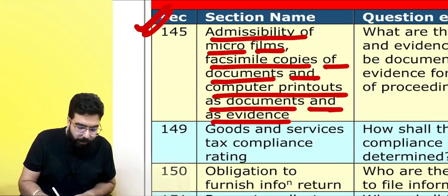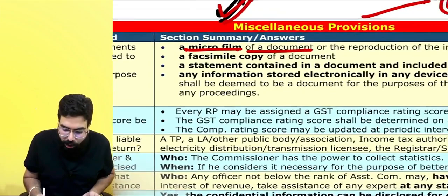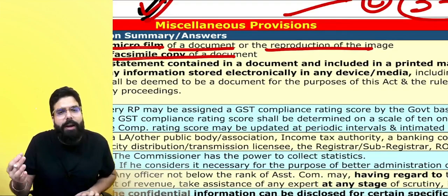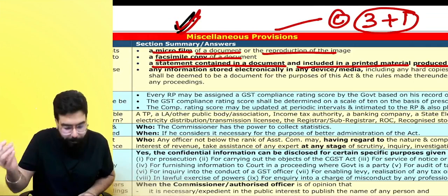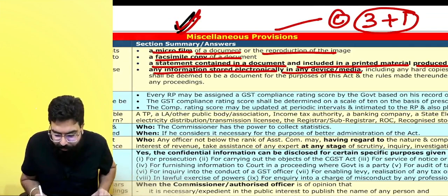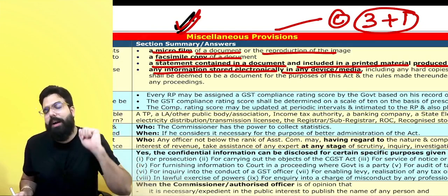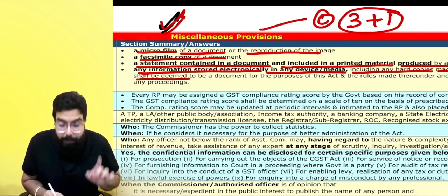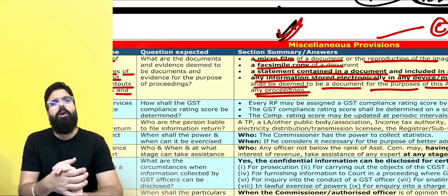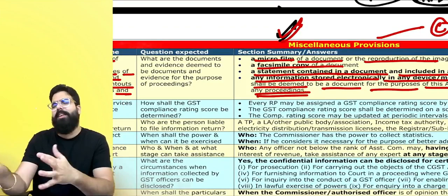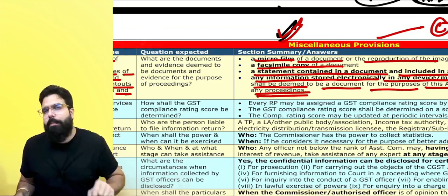Section 145 says that a microfilm of a document, or a facsimile copy (which means a Xerox copy), or a statement in a document including a computer printout, or any information stored electronically in any device or media — such as a pen drive or hard disk — and hard copies made of such information shall be deemed to be a document and shall be admissible in any proceeding. So officers can use all these as evidence and a demand order can be raised on you.